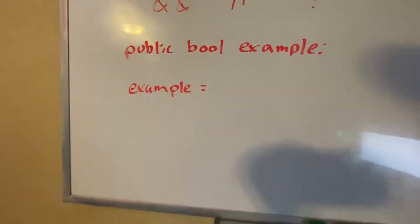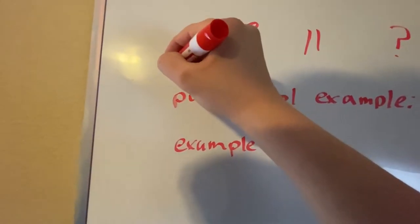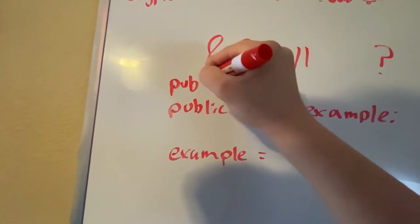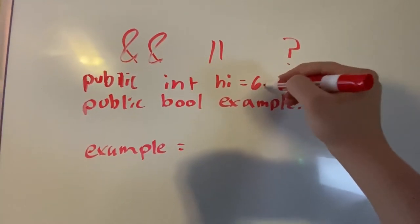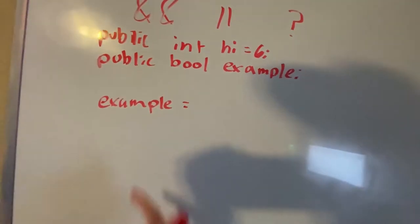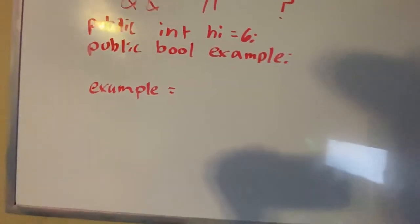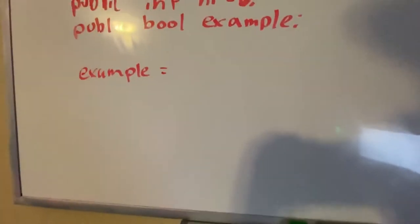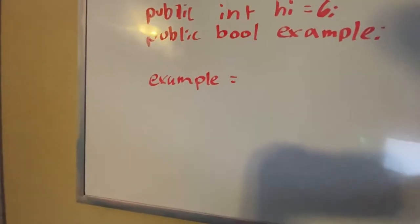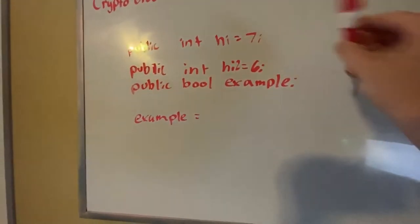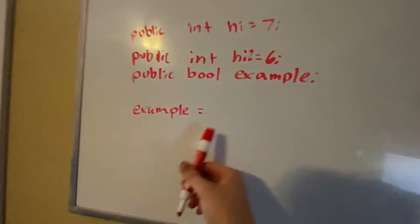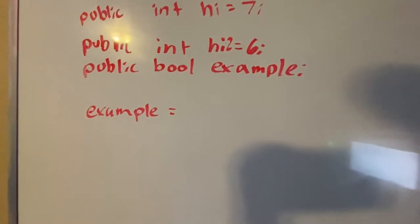So we're going to set example equal to, let's say we have an int as well, public int high equal to six. So let's say we want to set this either to true or false. So let's say we have high and high two, and this is equal to seven, and high two is equal to six. So let's say we want to set this to true if these two are equal to each, or if they're equal to the specified condition.